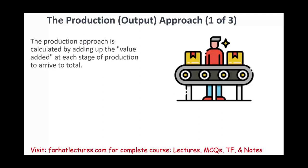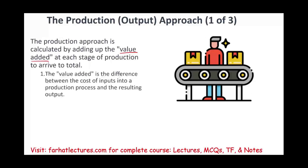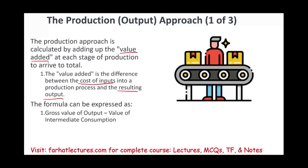Starting with the production output approach: this approach is calculated by adding all the value added at each stage of production to arrive at the total. The value added is the difference between the cost of input into the production process and the resulting output — because we want more output than input. The formula can be expressed as: the gross value of the output minus the value of intermediate consumption. Let's take a simple example to illustrate this.